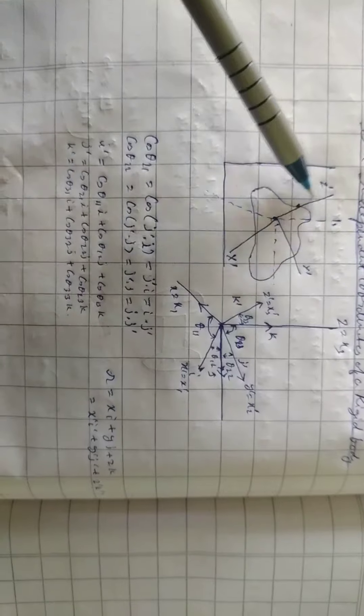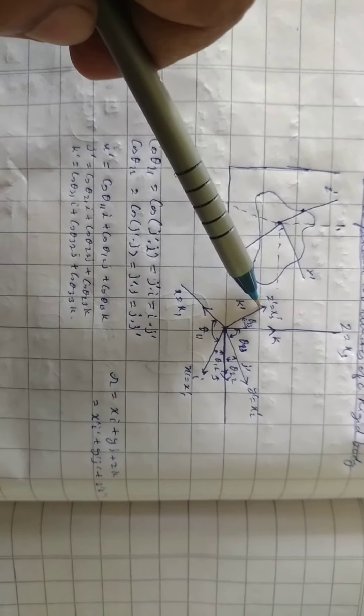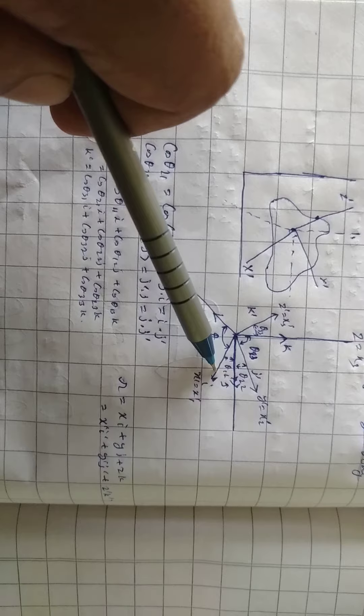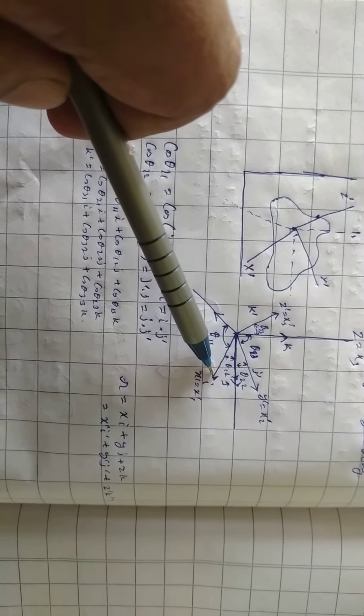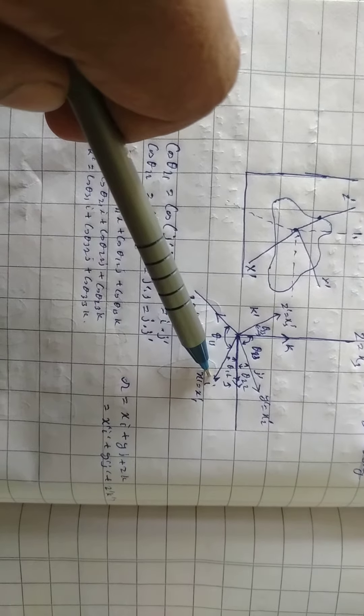This is x dash, y dash, and z dash. This z dash is equal to x1 dash, y dash is equal to x2 dash, and x dash is equal to x3 dash.